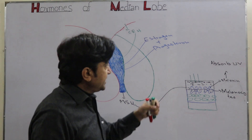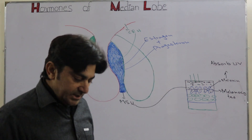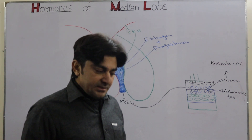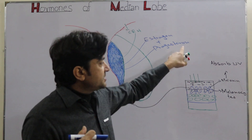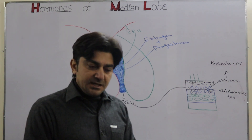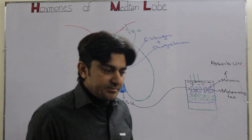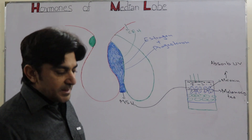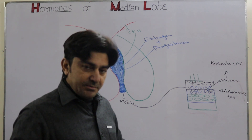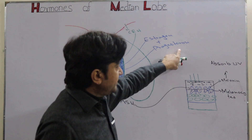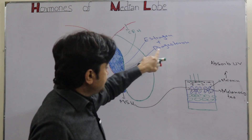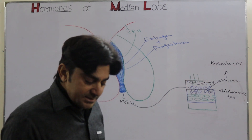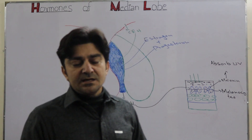This is the reason that during pregnancy, estrogen and progesterone levels are high. Progesterone is very necessary for the maintenance of pregnancy — if progesterone does not remain elevated, the uterus cannot maintain the fetus and blood supply decreases. So progesterone levels remain high in pregnancy, which stimulates intermediate lobe cells to produce MSH, and MSH acts on melanocytes to produce melanin. This is the reason that during pregnancy the skin of the female becomes darker.